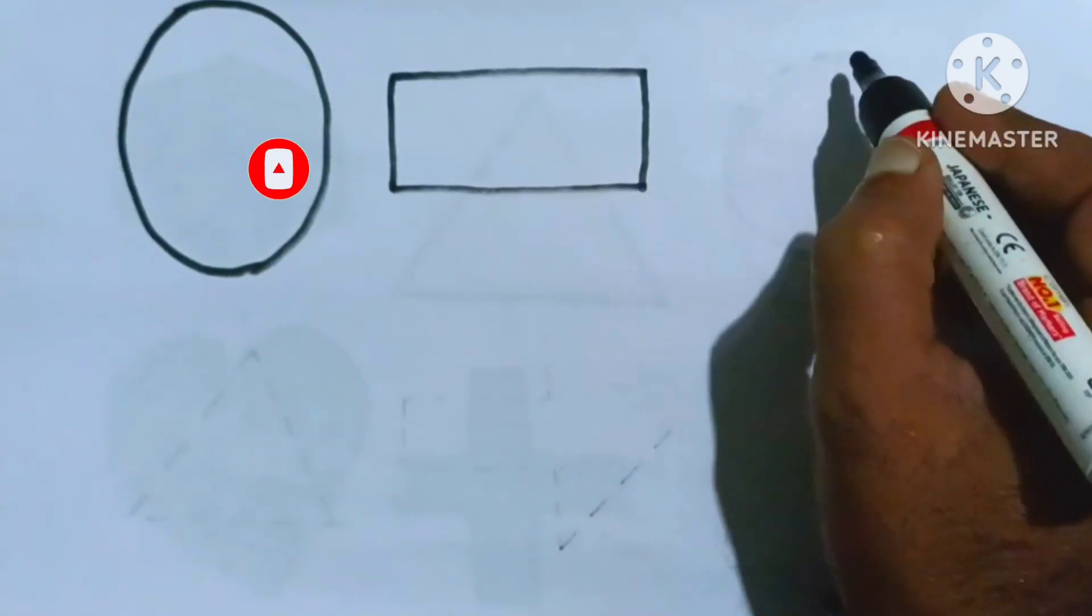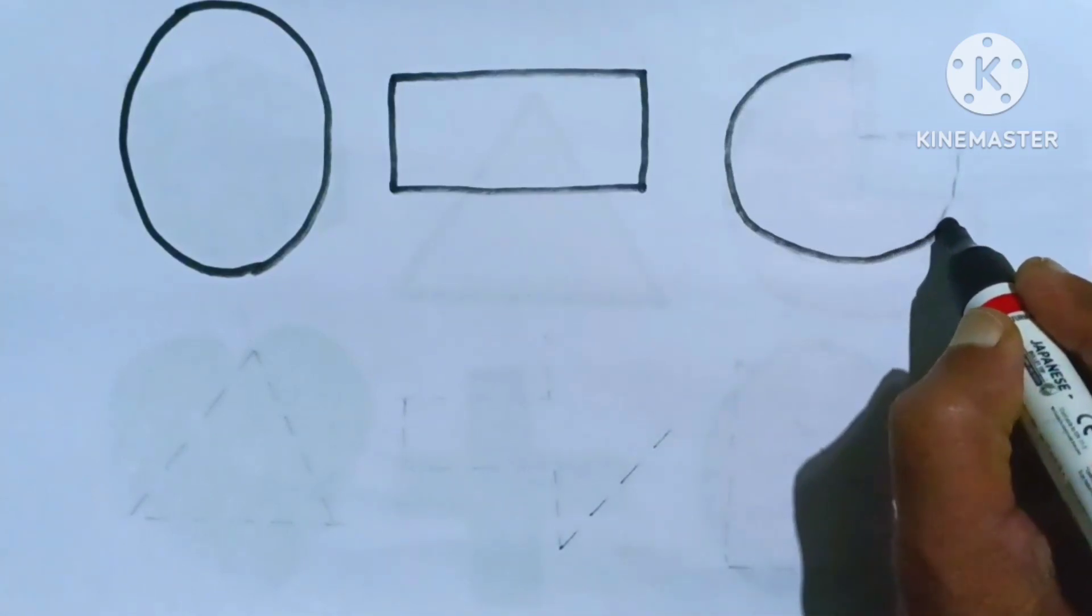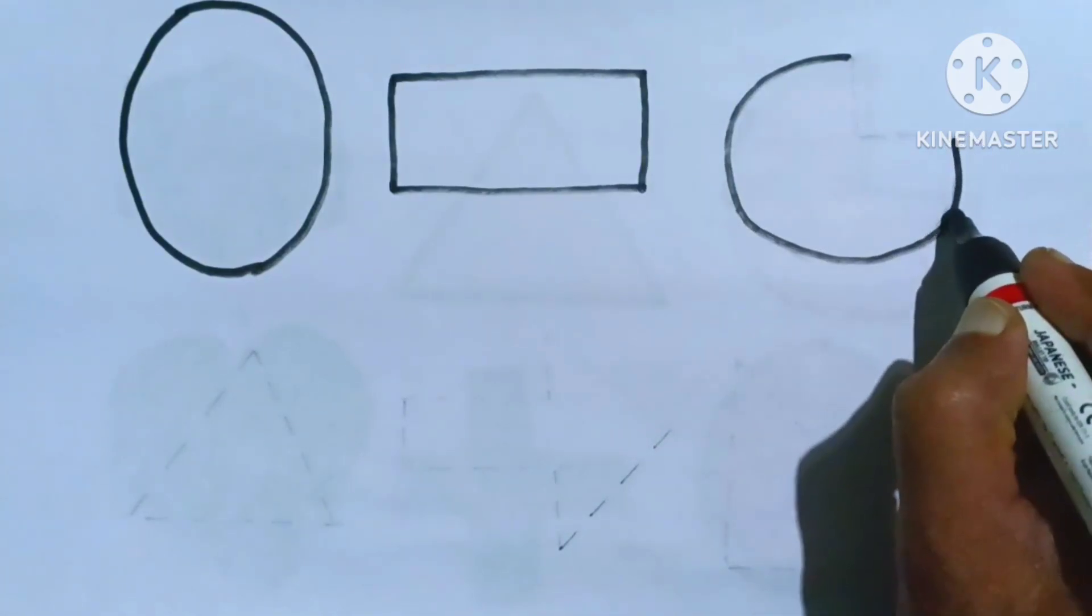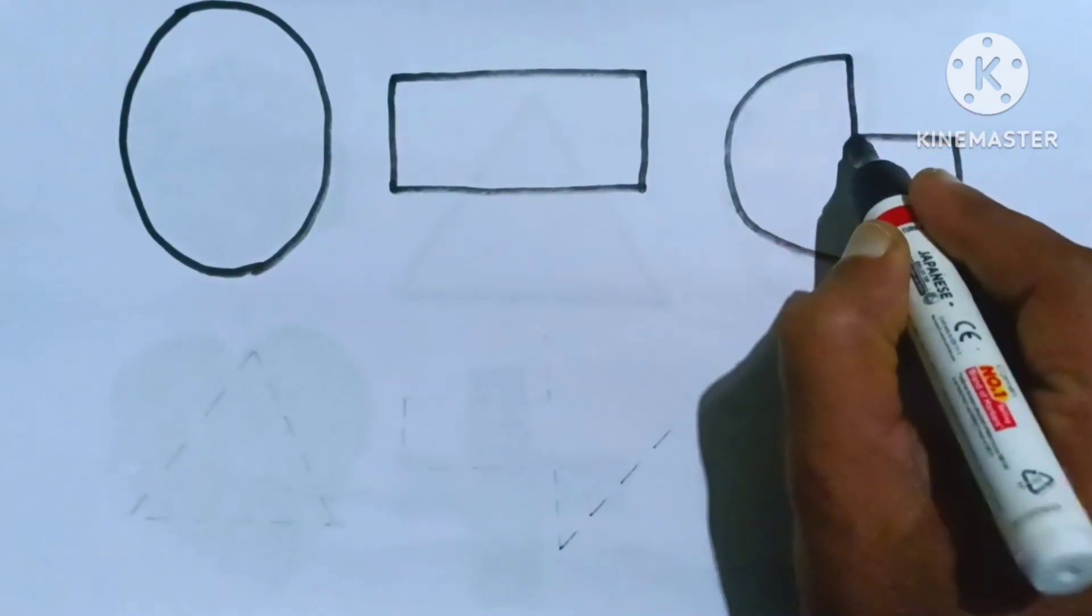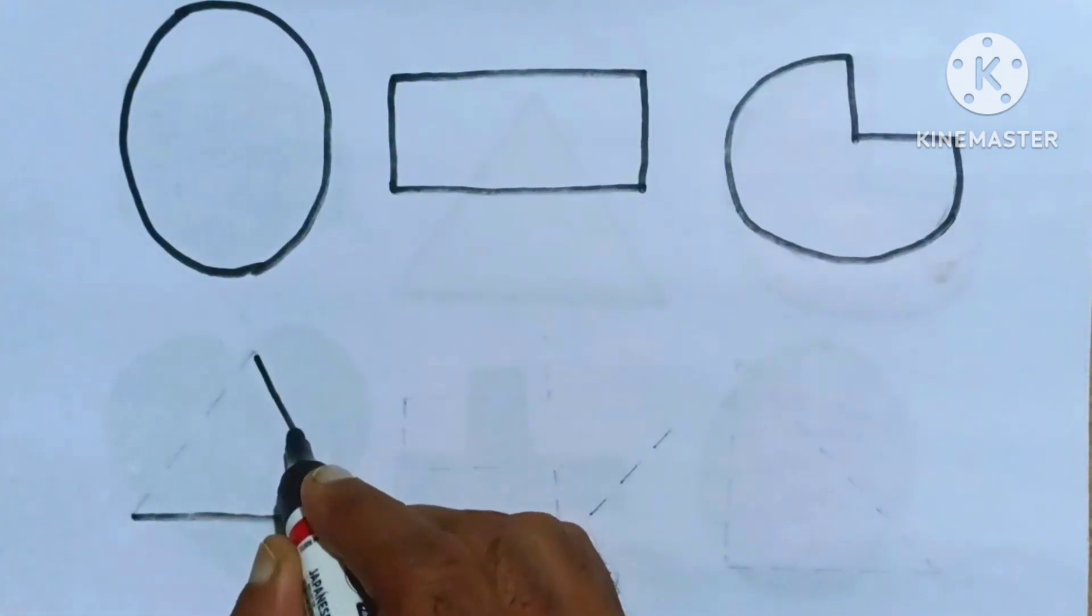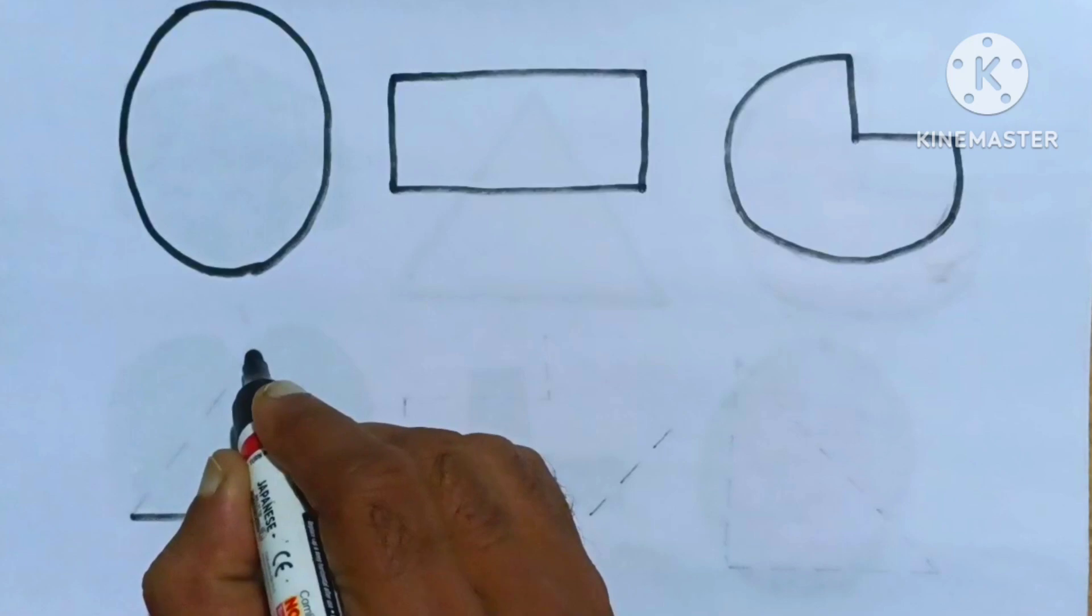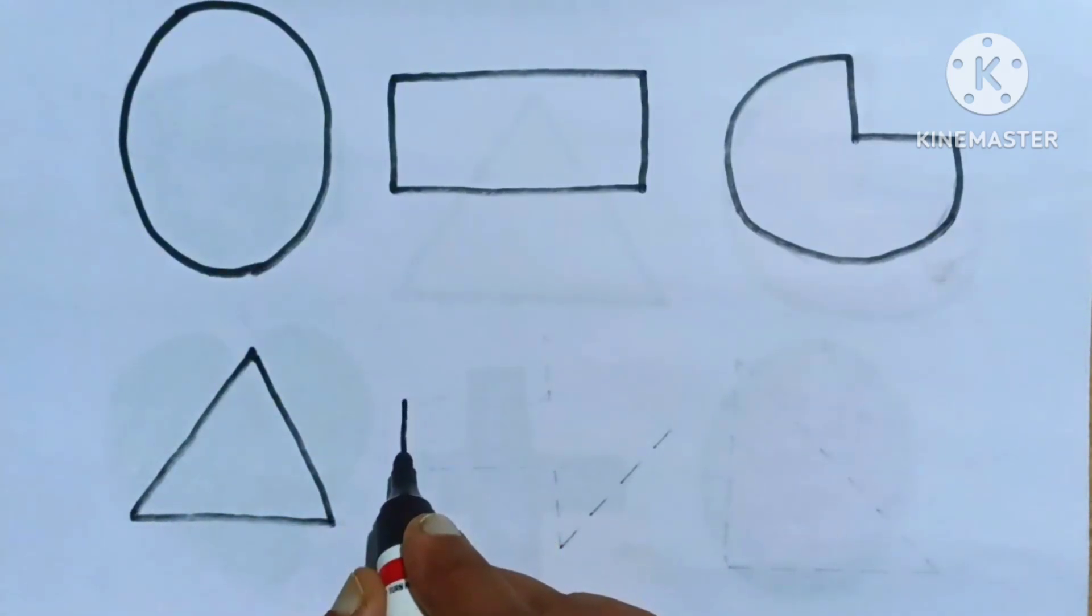Rectangle pie. Pie triangle. Triangle arrow.